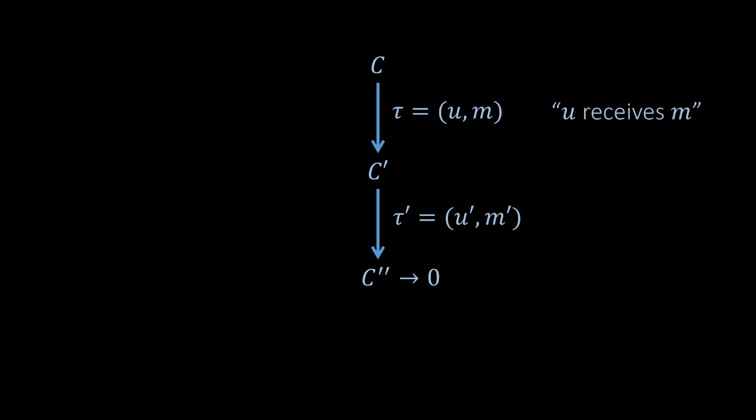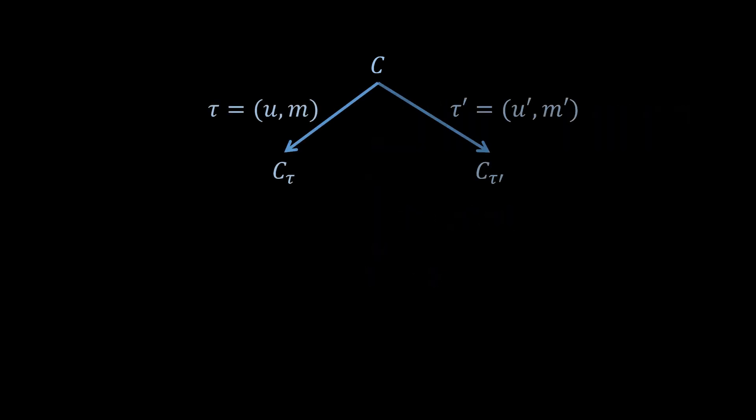Let's take a closer look at these transitions. In this example, there is a transition from C to C' and then to C'', which is a 0-valent configuration. A transition is characterized by a particular message that a certain node receives — for example, node U receives message M. Now let's consider transitions to two different configurations, and let's assume a different node received a message in the two transitions. These two child configurations may then transition to other configurations when the message received first in the other path is now also received. Since the messages were received on two different nodes, the transitions are independent, and so the resulting configurations must be identical.